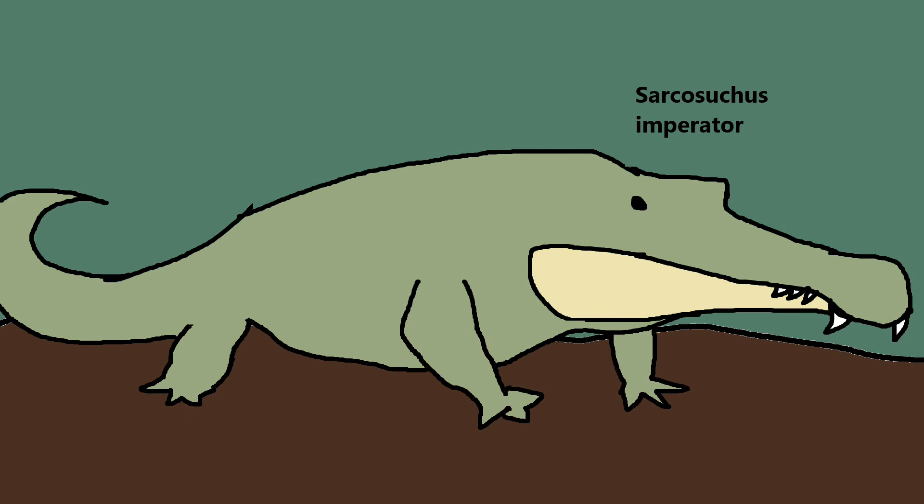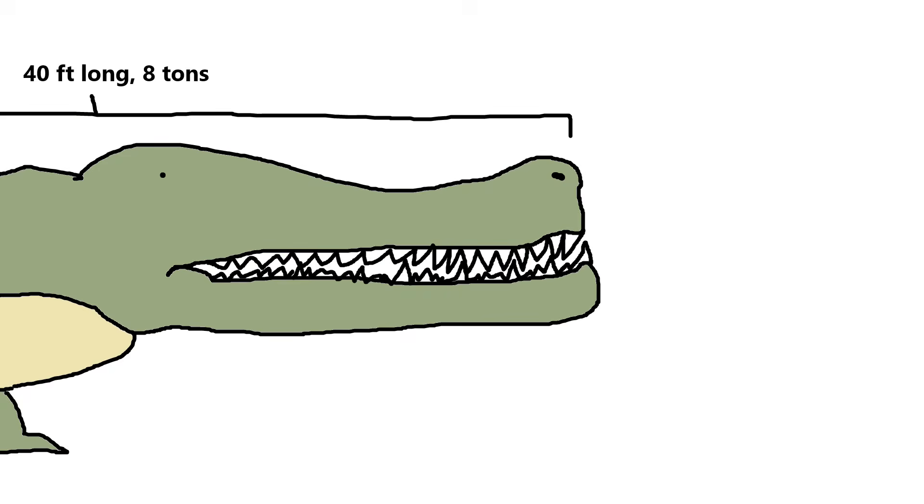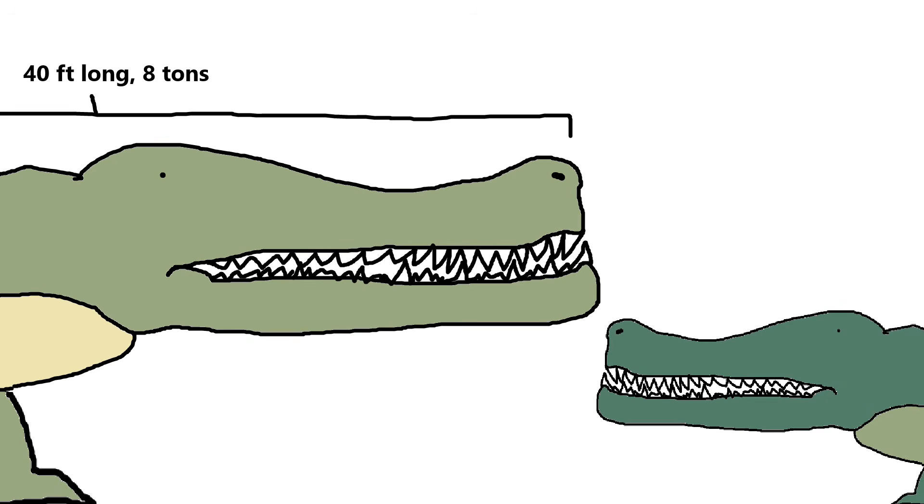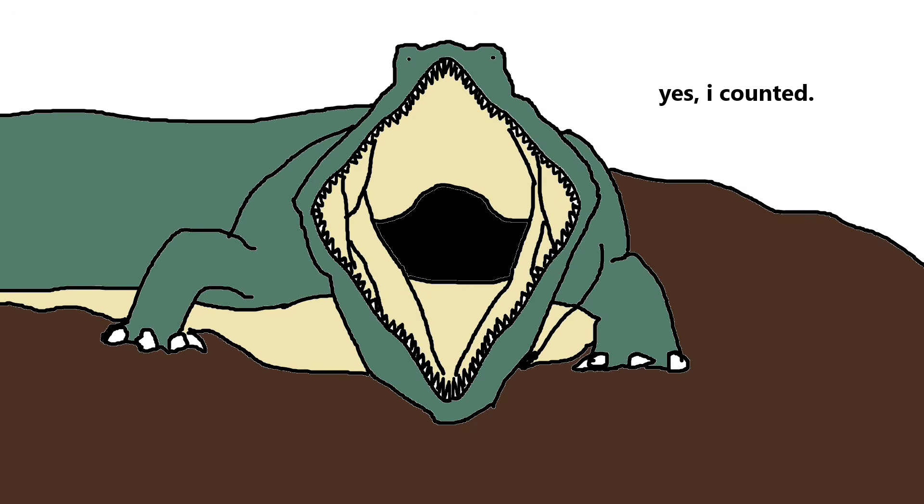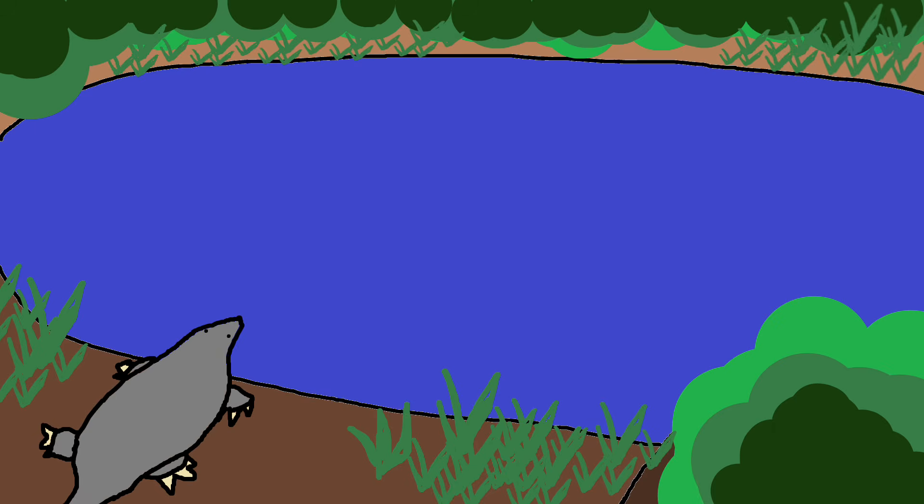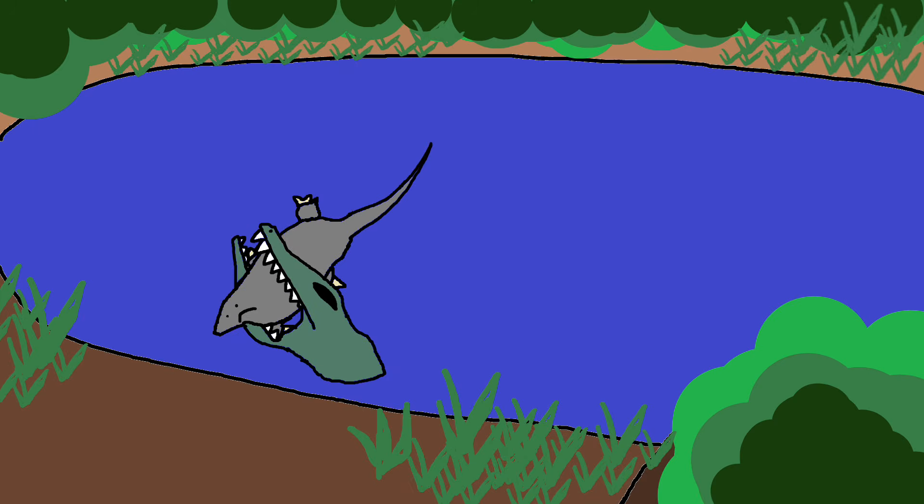Sarcosuchus, more commonly known as the Super Croc, was a crocodilian giant of the Cretaceous period, reaching 40 feet in length and weighing 8 tons. It was twice the size of today's largest crocodiles. With a long snout filled with over 100 teeth, Sarcosuchus was a deadly ambush predator, capable of taking down dinosaurs that ventured too close to the water's edge. Its fossils found in Africa reveal a predator built for power, its immense size securing its place as one of the largest crocodilians to ever exist.